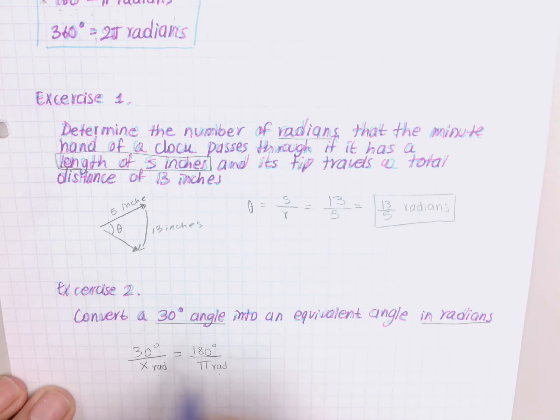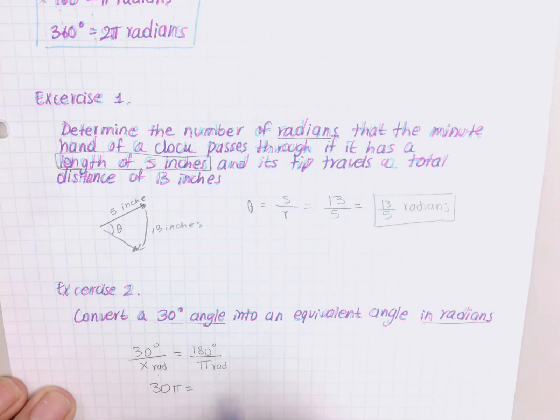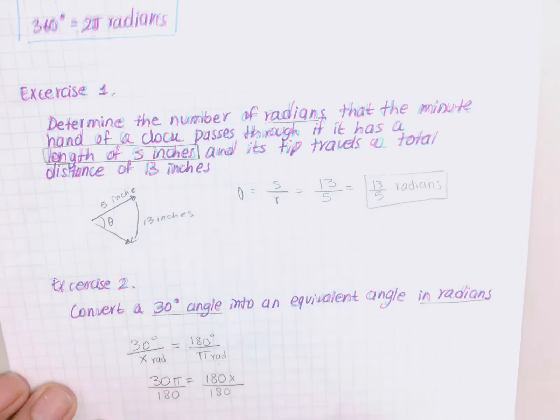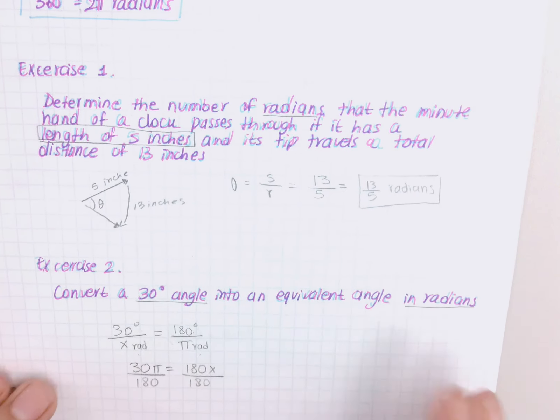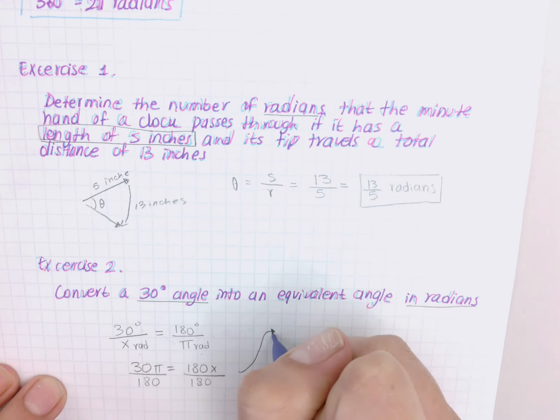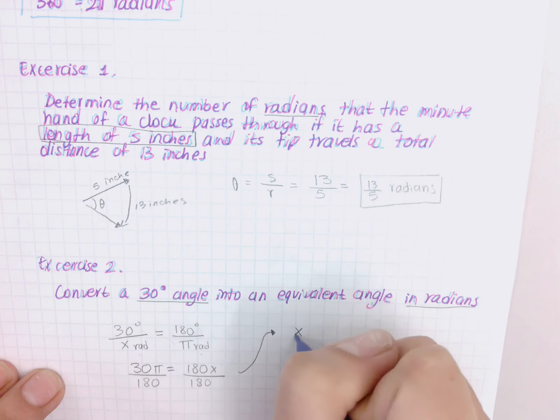And then you're just going to solve for x. So solving for x, if I cross multiply, I end up with 30π equals 180x, divide by 180 on both sides. You always want to keep everything in terms of π, so we're not going to give a decimal. We're going to keep that π out, so we have x equals 30π over 180.